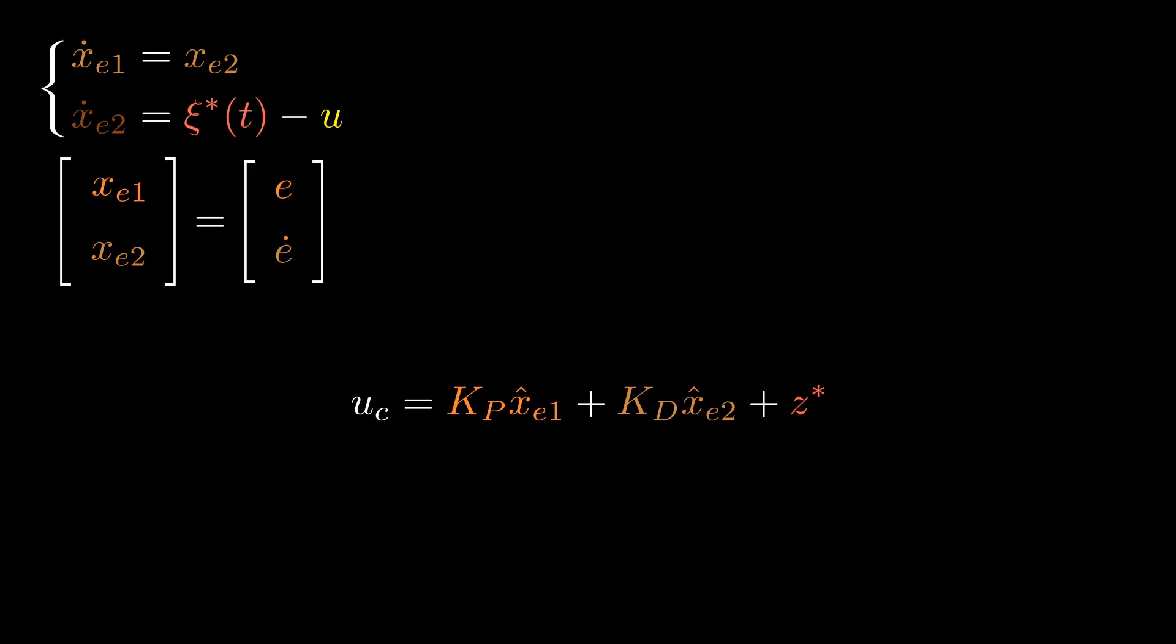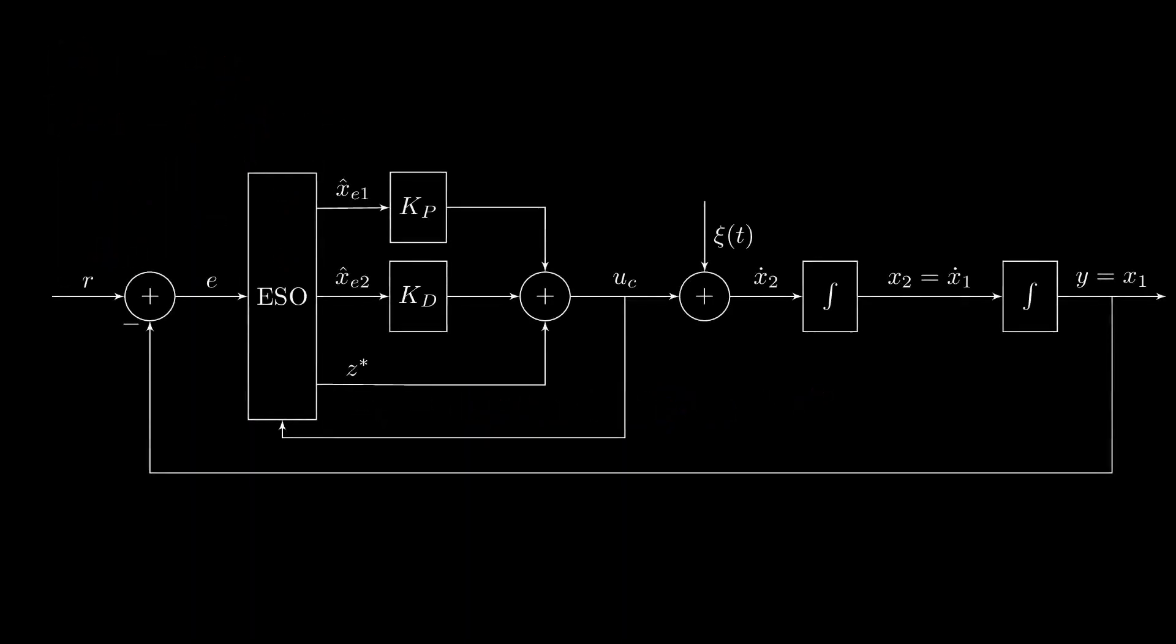Before we give it a try in simulation, let's take a look at the block diagram of the whole system. This is how the error-based ADRC system looks like. There's no tracking differentiator, and you can clearly see that the reference signal is used only to calculate error signal, which is then fed to the extended state observer. Please keep in mind that this is only one of many possible configurations of error-based ADRC, and you can find many variations in the literature.